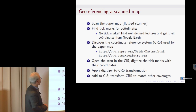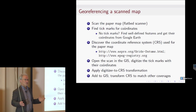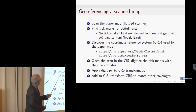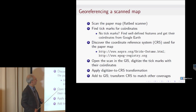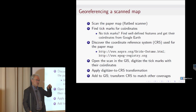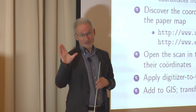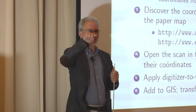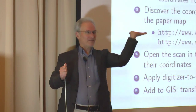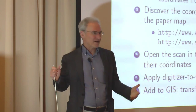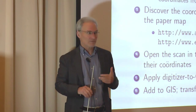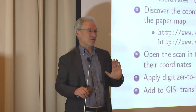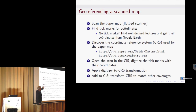To do this, you scan the paper map at high quality using a flatbed scanner to avoid distortion, using as good a paper copy as possible. Then you find tick marks for coordinates. If you can't find any coordinates, you find well-defined locations like road crossings — making sure they haven't moved. Tom and I did this with maps in Croatia years ago and discovered a road had been re-routed, putting us off by 1,800 meters. A major step is discovering the coordinate reference system — you're hoping it's on the map.